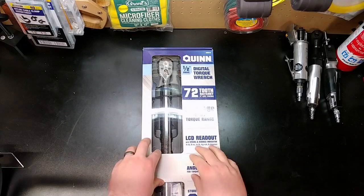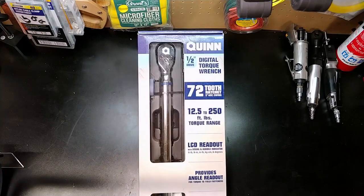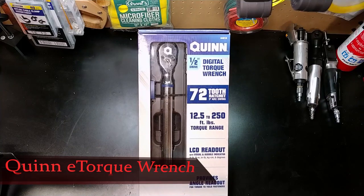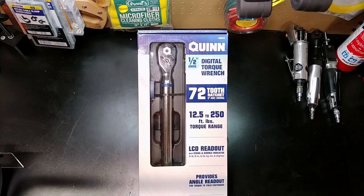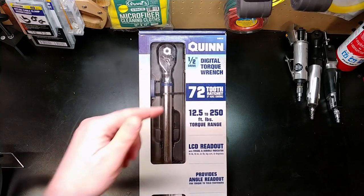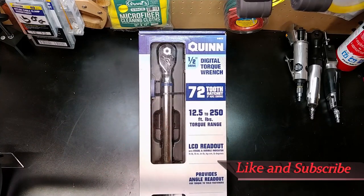Hey folks, thanks for joining me again in the garage. We're going to be looking at this new Quinn digital torque wrench, half inch, goes from 12.5 to 250 foot-pounds. We're going to unbox it here and get going. So just like, subscribe, comment down below. See you in just a second.